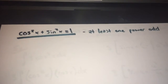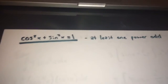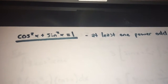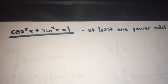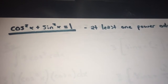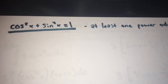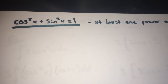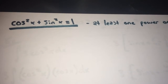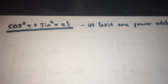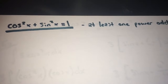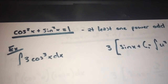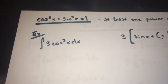Next we're going to be looking at other trig identities to solve integrals. First we're going to integrate powers of sine and cosine. We're going to use cosine squared x plus sine squared x equals 1, and we're going to do it for when at least one power is odd.